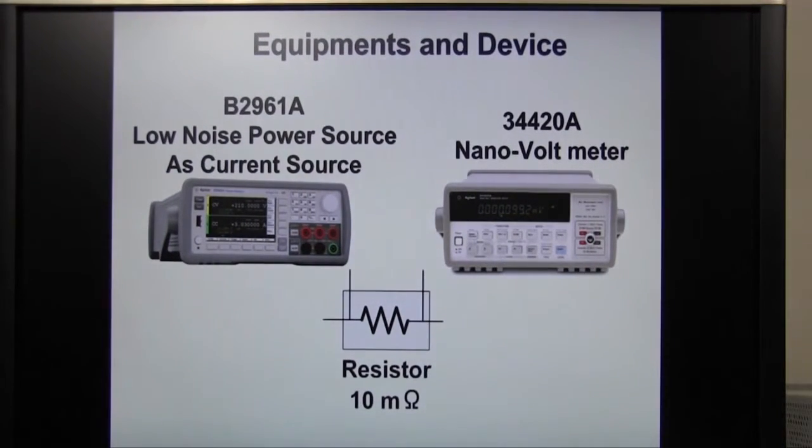Today, I would like to show you how to measure a 10 milliohm resistor by using B2961A and 34420A. B2961A is a voltage current source. I will use this as a DC current source. 34420A is a nanovolt meter to measure the voltage.